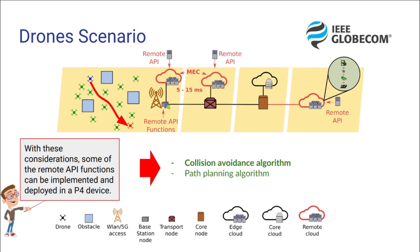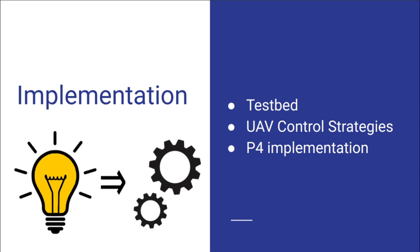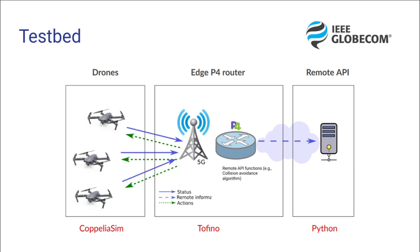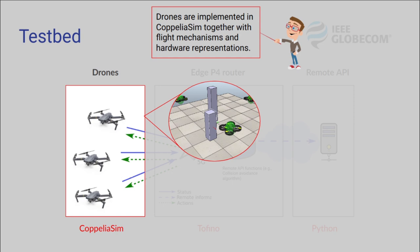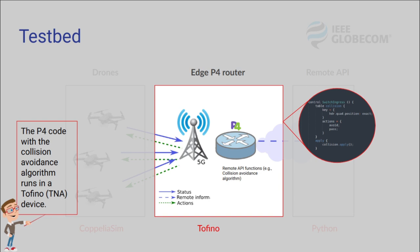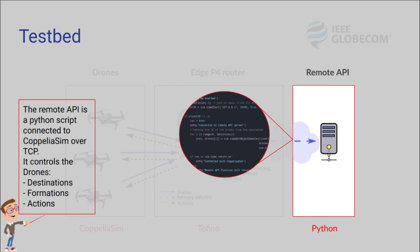Now let's talk about the implementation, the testbed, the strategies for the avoidance algorithm, and the P4 implementation. Basically, this is our testbed. Drones are implemented in CoppeliaSim together with the flight mechanism and hardware representations. The P4 code with the collision avoidance algorithm runs in a Tofino device, and the remote API is a Python script connected to CoppeliaSim over a TCP session. This remote API controls the drone's destinations, formations, and actions.